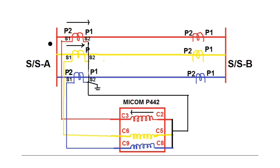Now consider the case where P2 is connected towards the bus side and P1 is connected towards the line side — that is, the HV side CT polarity is reversed — while the CT secondary connections remain the same as before. In this case, if current flows from P2 to P1, the secondary current flows from S1 to S2. Therefore, current in the relay coil flows from C2 to C3, and the relay will see this current as a reverse direction.